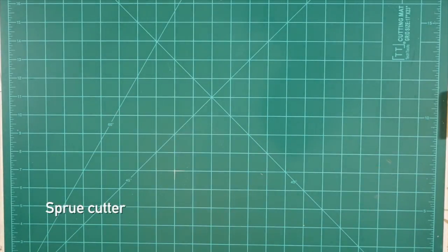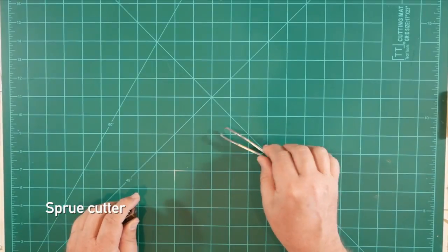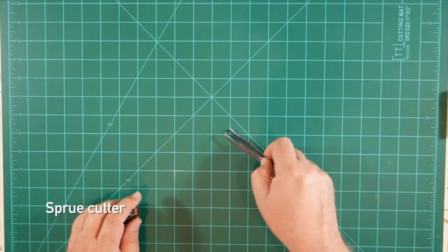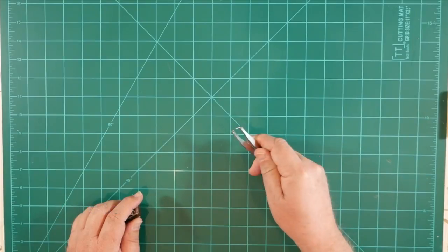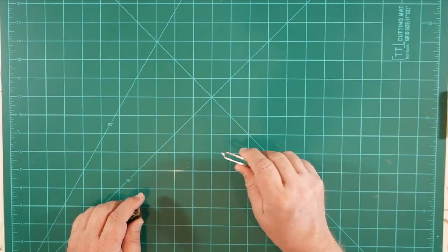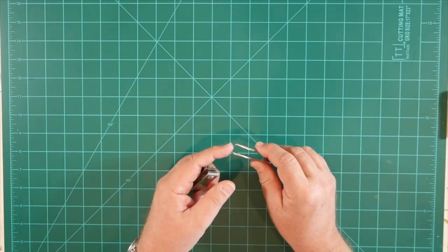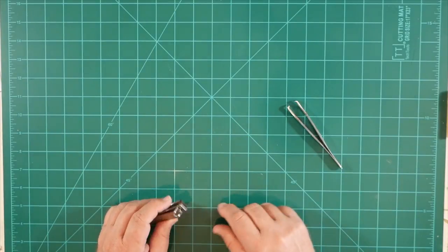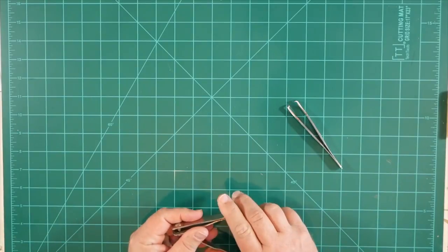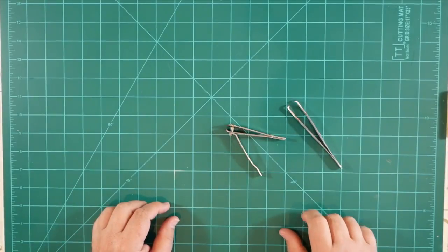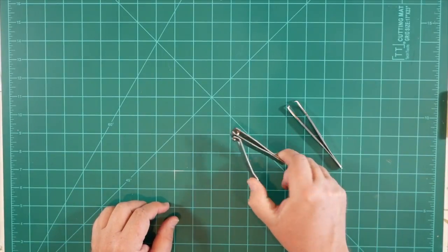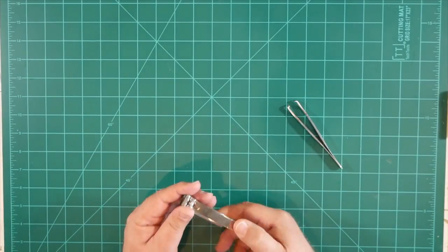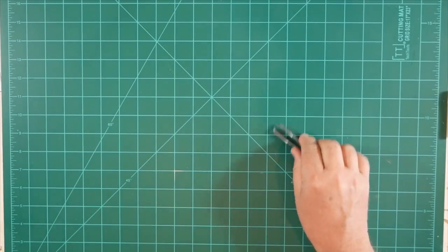The next thing we'll need is a sprue cutter to cut the parts off of the sprues. This is a purpose-built sprue cutter, kind of fancy. I think I paid fifteen dollars for it some years ago. It's got a couple very sharp jaws here that you use to clip parts off of sprues. An inexpensive alternative to that is a pair of toenail clippers. It's kind of gross but they work great. So that's an option available to you as well.